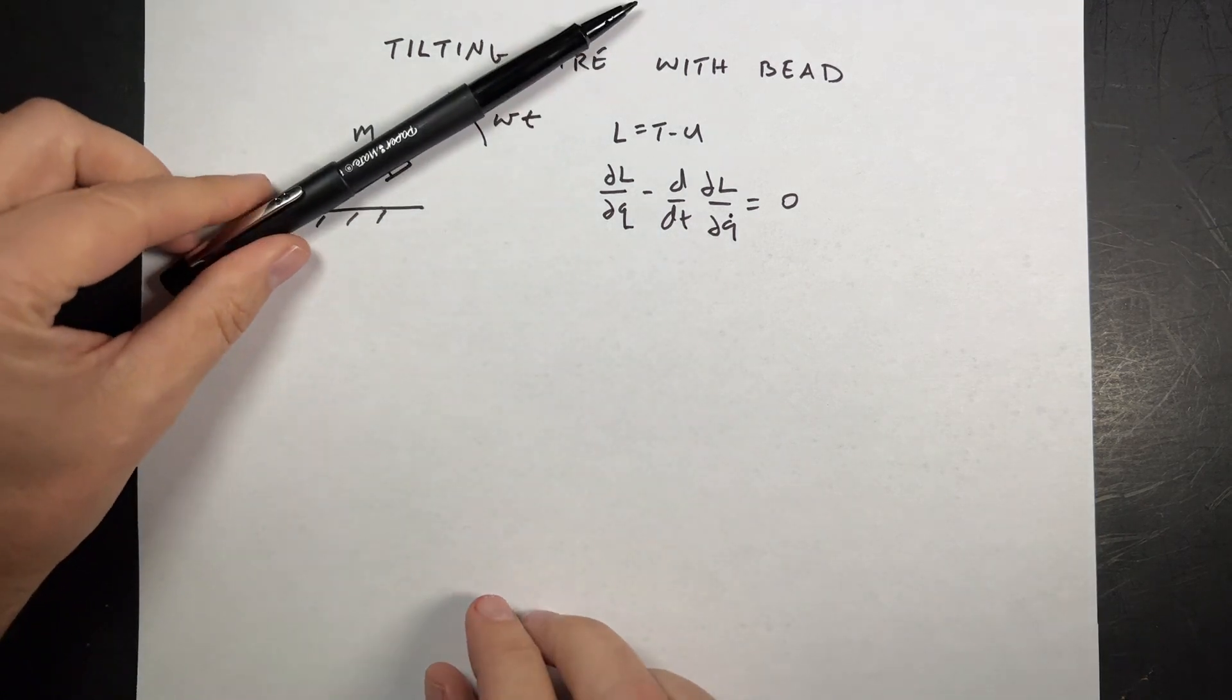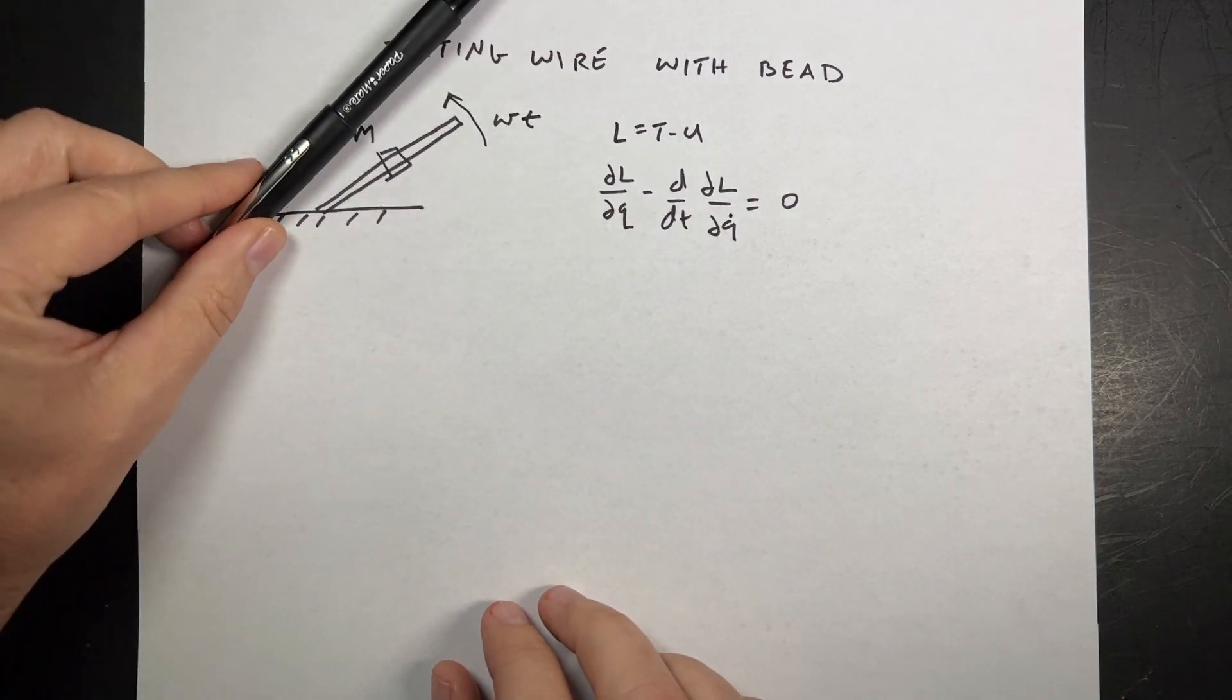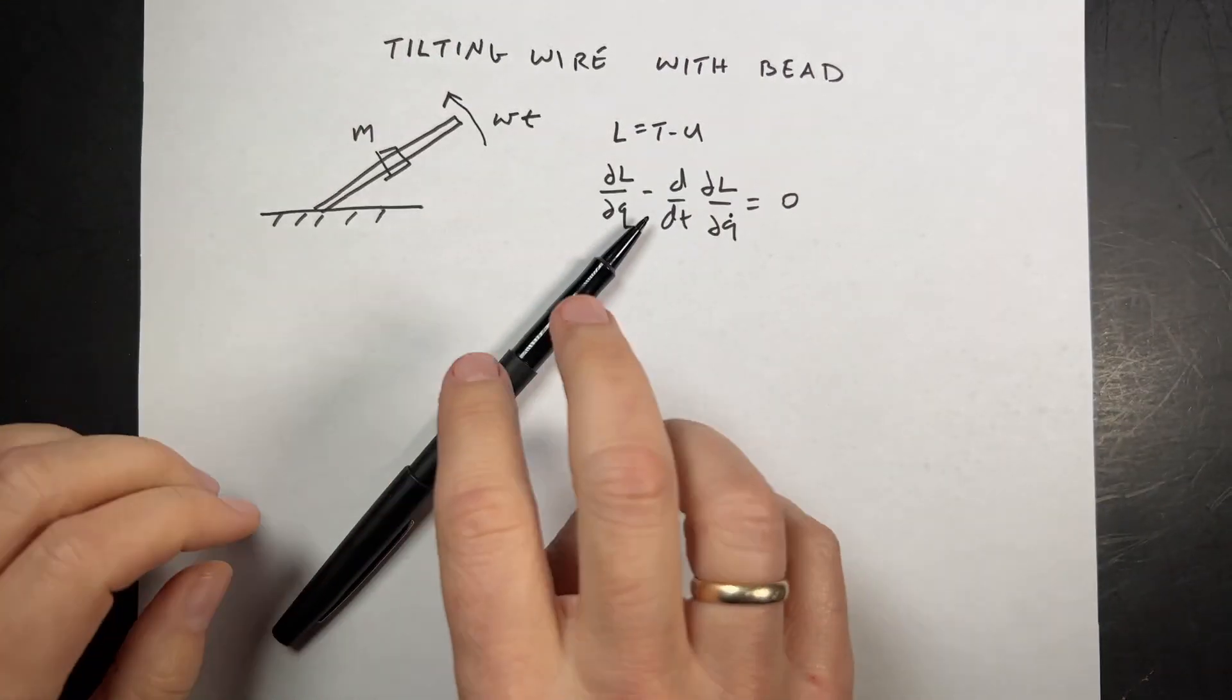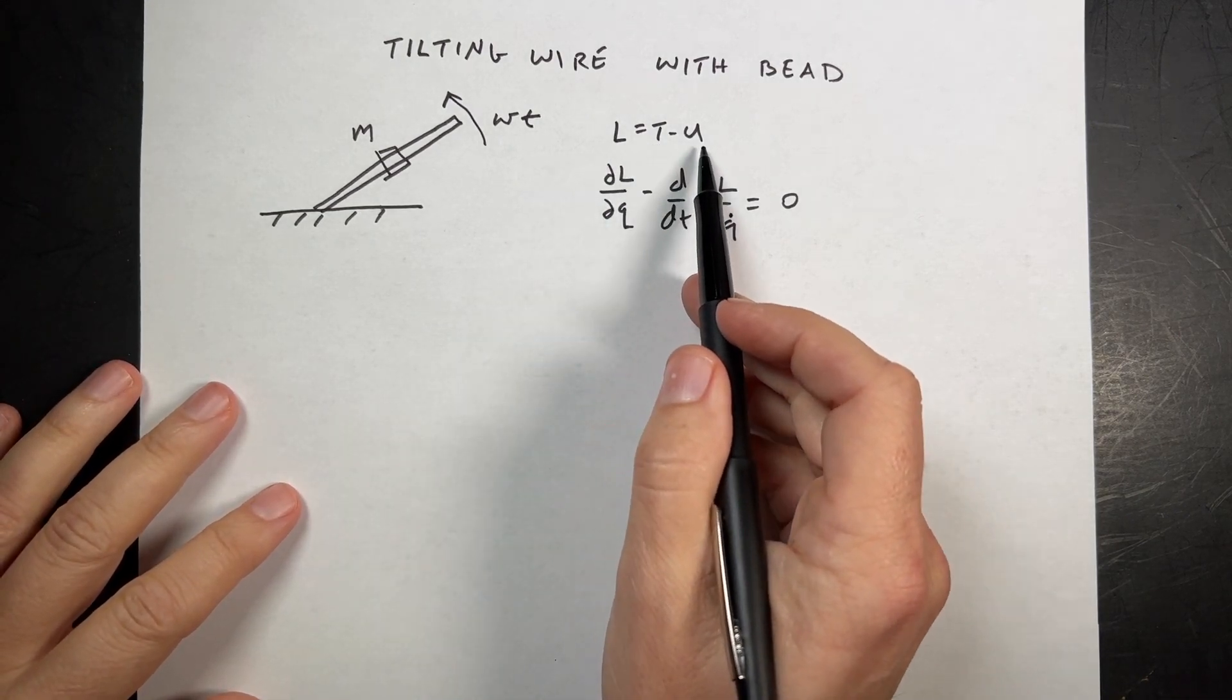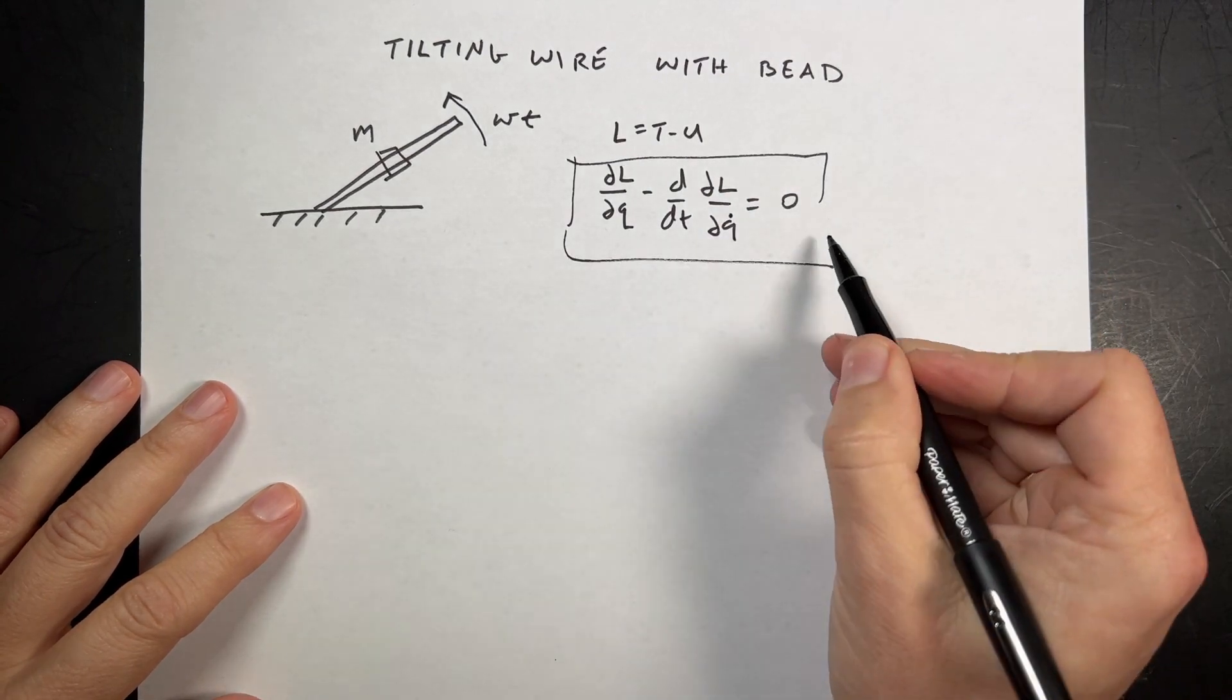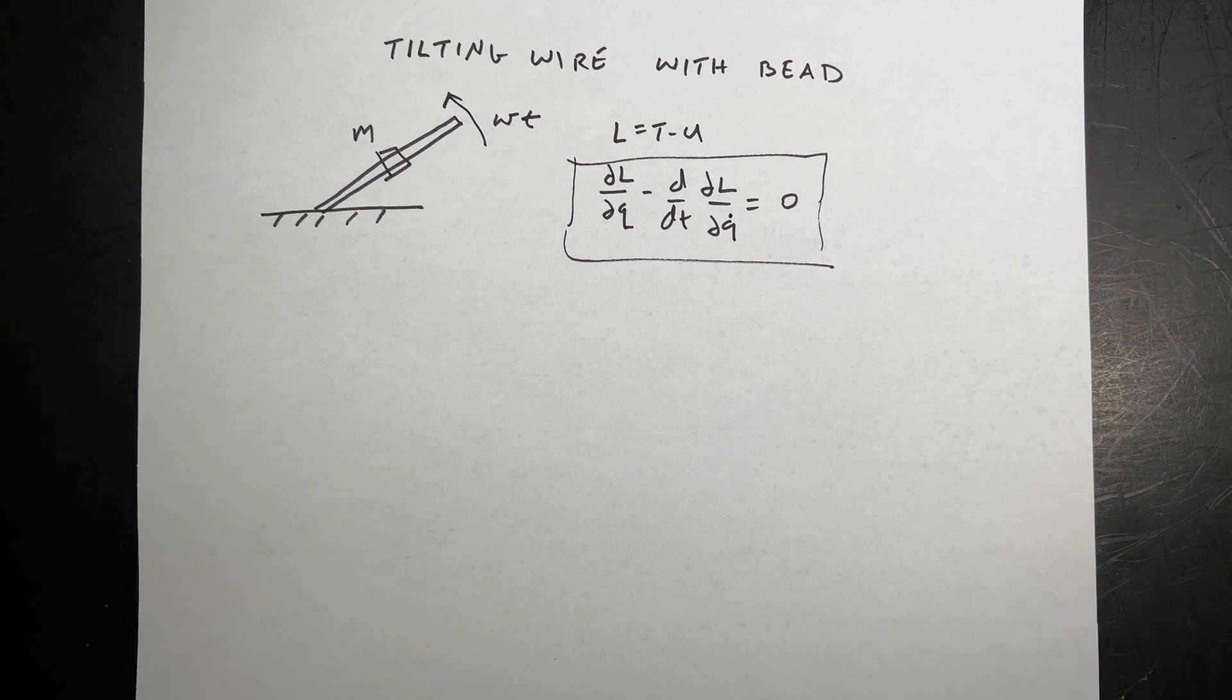So the situation is we have a wire like that and the wire starts right here and it's tilting up at some constant angular speed and then there's a bead that can slide on the wire. So we're going to use the Lagrangian mechanics. Lagrangian is the kinetic energy minus potential. And then this is the Euler-Lagrange equation that we can use to solve for the equation of motion. And I don't think I need to describe that if you're here already.